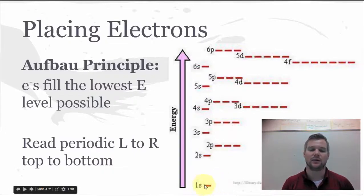What this diagram is showing is that the 1s orbital happens to be the lowest energy level, and then 2s, followed by 2p, 3s, 3p, 4s, 3d, 4p, 5s, etc.